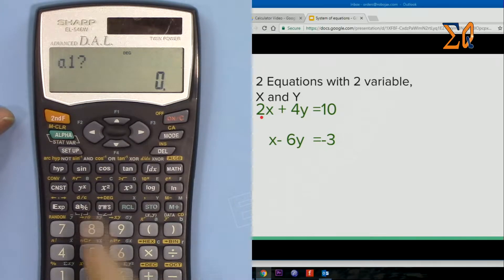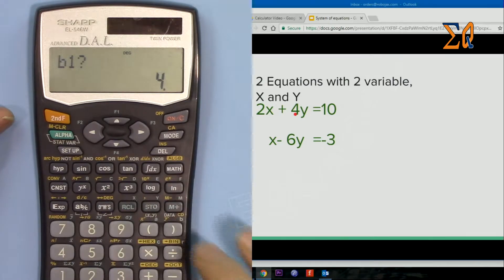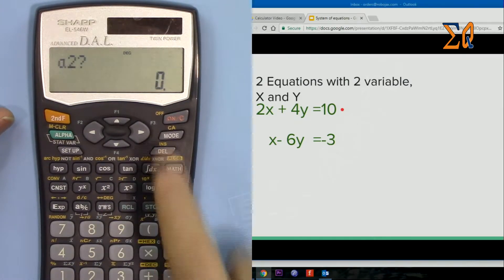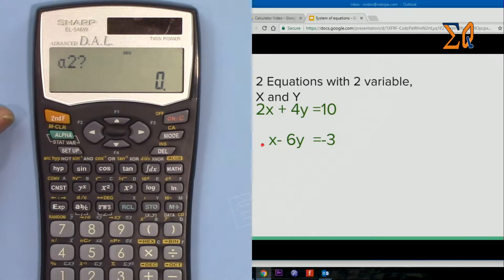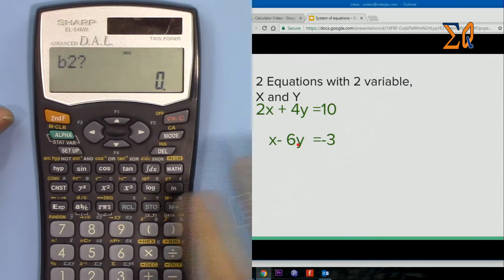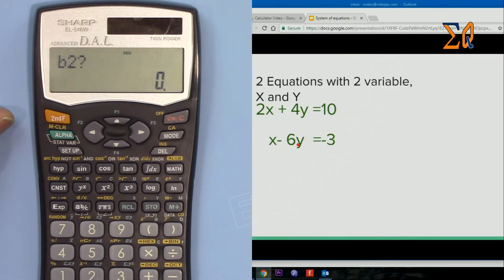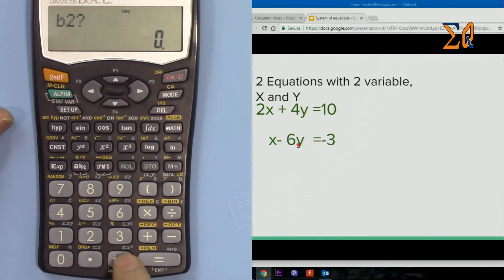So A1 is 2, the coefficient of Y is 4, that's B1, and then C1 is 10. When I press equal sign it goes to A2. Here A2 is the coefficient of X, so 1. B2 is minus 6. I'm pressing this minus here, minus 6 and then equal sign.